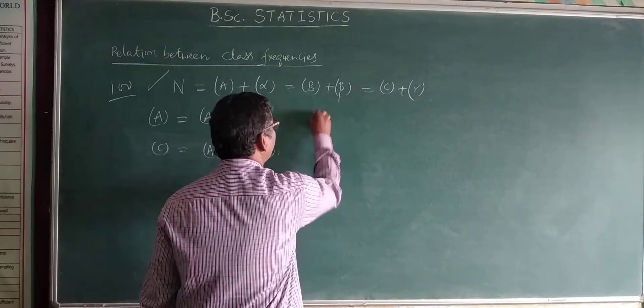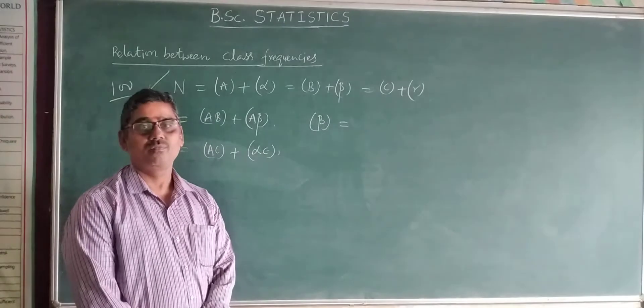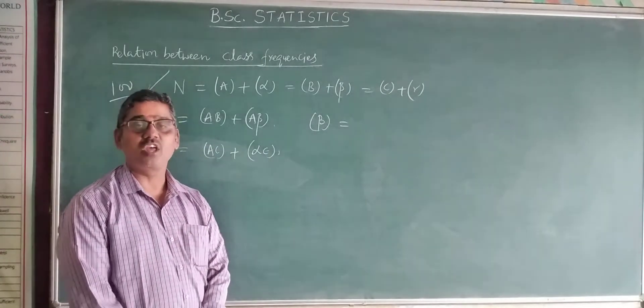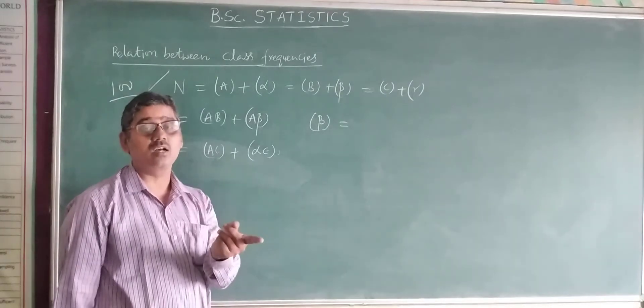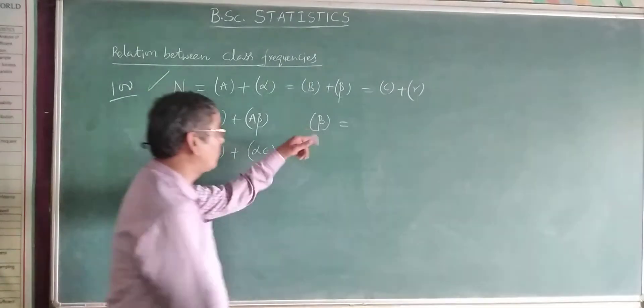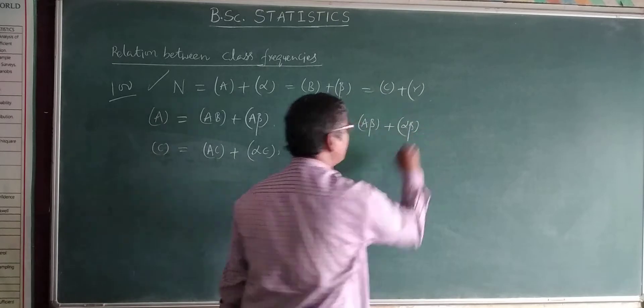For example, beta. How can you write beta? Beta is an attribute belonging to B. B is positive, beta is negative class. Therefore, beta can be written with A or with C. I write both formulas. For with A, first: A beta plus alpha beta.